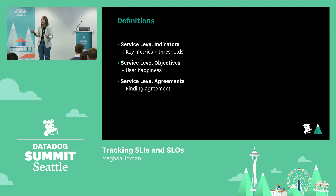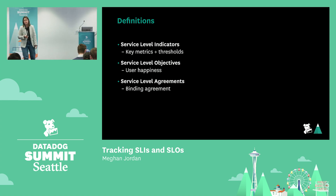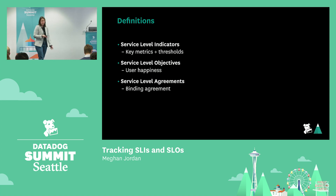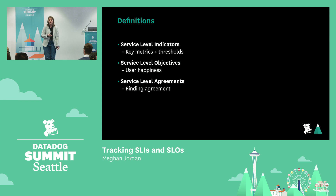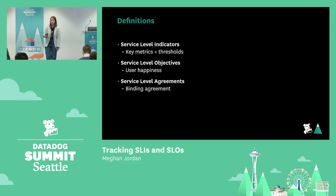I want to take a step back for a minute just to define a few things. SLIs — service-level indicators — are the measurements, the metrics, and the thresholds they need to meet. Service-level objectives are the internal target values, for example the amount of time that SLI must be met, and by meeting that objective, you're meeting your customer's expectations. Service-level agreements are your commitments with users that when breached will probably result in some legal or financial obligation.